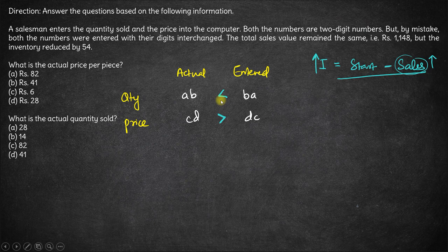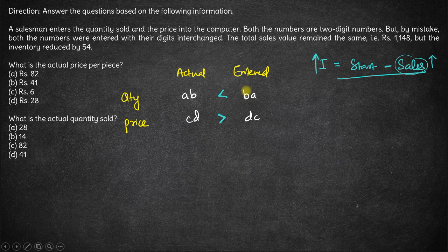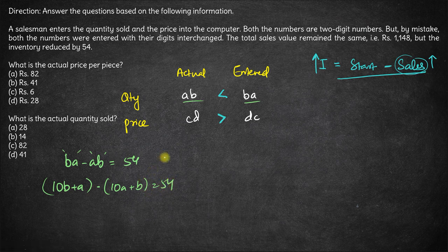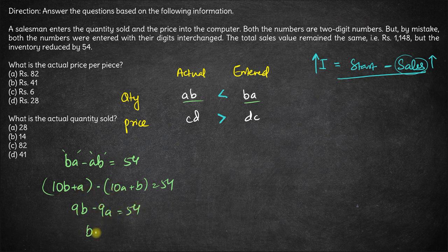Now let's solve it the proper algebraic way. The actual quantity sold must be less than the entered quantity — that's why the inventory is reducing, because you enter a higher number sold, hence the number left is lower. So the difference BA minus AB must equal 54. Expanding: (10B + A) − (10A + B) = 54, which gives 9B − 9A = 54. Dividing by 9, we get B − A = 6.